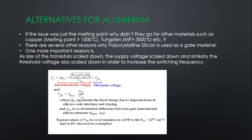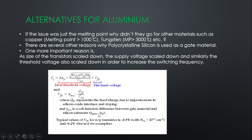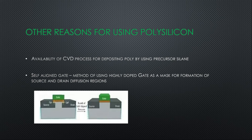So φ_ms needs to be smaller and smaller in order to reduce V_T. The work function is the energy required to move an electron from the silicon substrate to the gate terminal. The only way to reduce this is by using identical atoms — so they went for silicon at the gate terminal, which reduces the flat band voltage, which in turn reduces the threshold voltage.